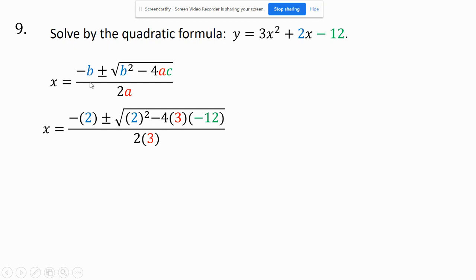And be careful here because this is the opposite of your b, so it's opposite of 2, which is negative 2. 2 squared is 4, and negative 4 times 3 is negative 12, and negative 12 times negative 12 makes a positive 144. And 2 times 3 is 6. I can add the 4 and the 144 to make 148.